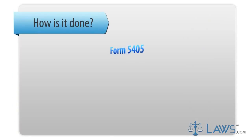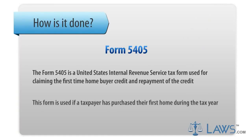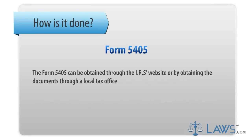Form 5405 is a United States Internal Revenue Service tax form used for claiming the first-time homebuyer credit and repayment of the credit. This form is used if a taxpayer has purchased their first home during the tax year. The Form 5405 can be obtained through the IRS's website or by obtaining the documents through a local tax office.